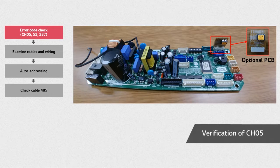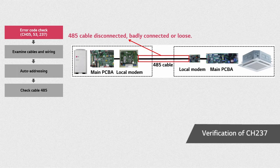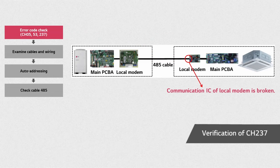If the optional PCB needs to be replaced, please proceed with the auto address setting. Error CH237 occurs when communication between the IDU's local modem and ODU's local modem fails. When this error occurs, you should check whether the 485 communication cable is disconnected, badly connected, or not fastened to the communication terminal block. Sometimes, there may be damage in the IDU's local modem communication IC which is connected to the ODU.